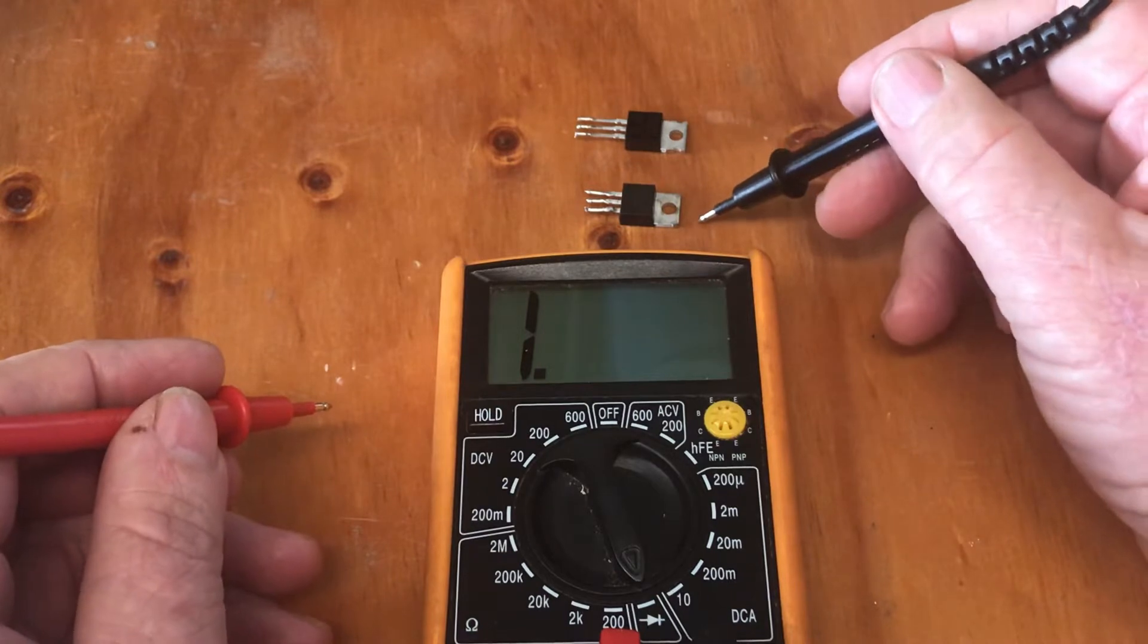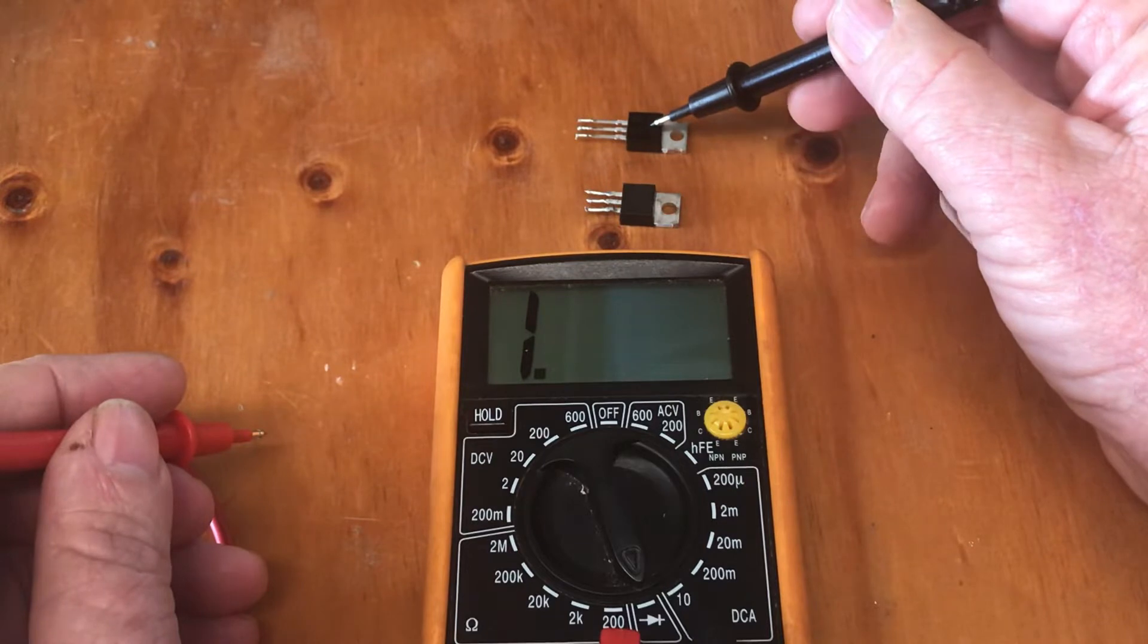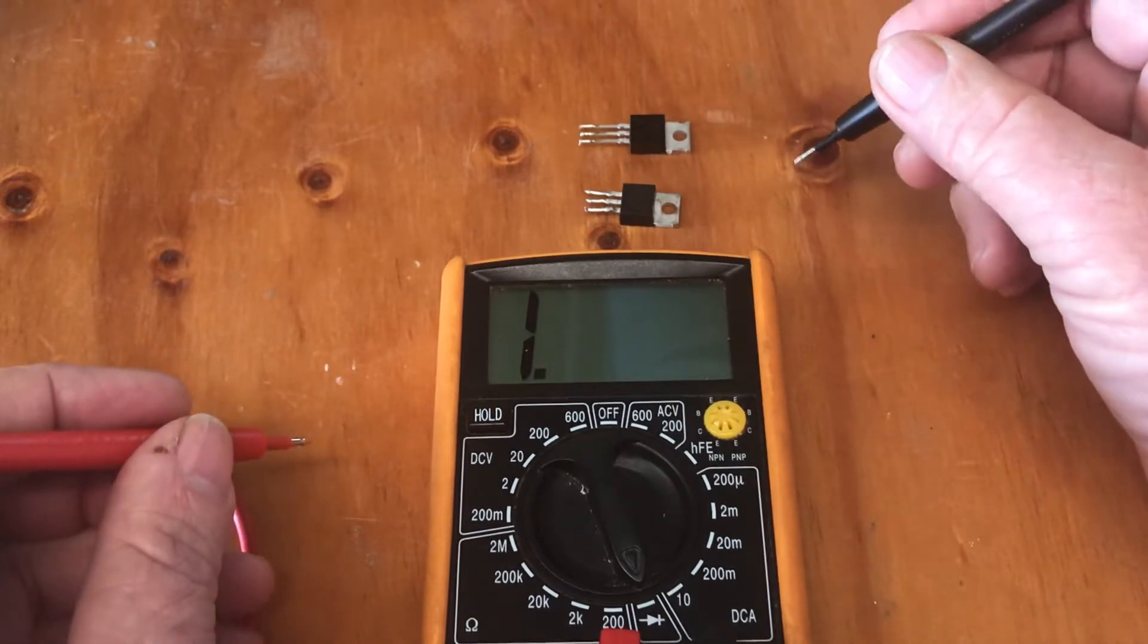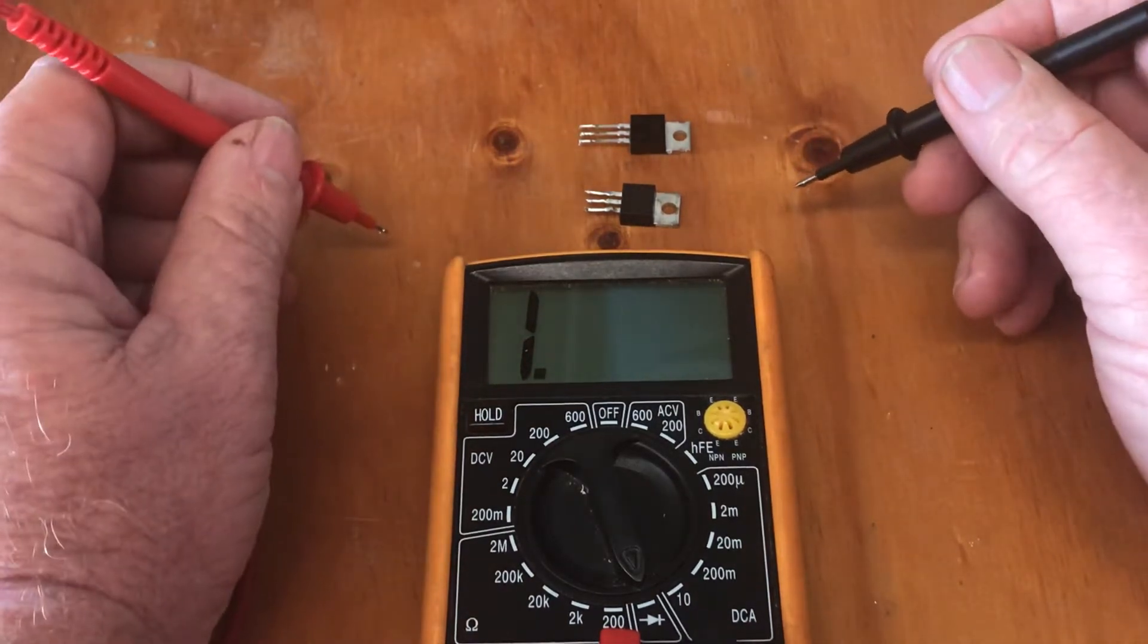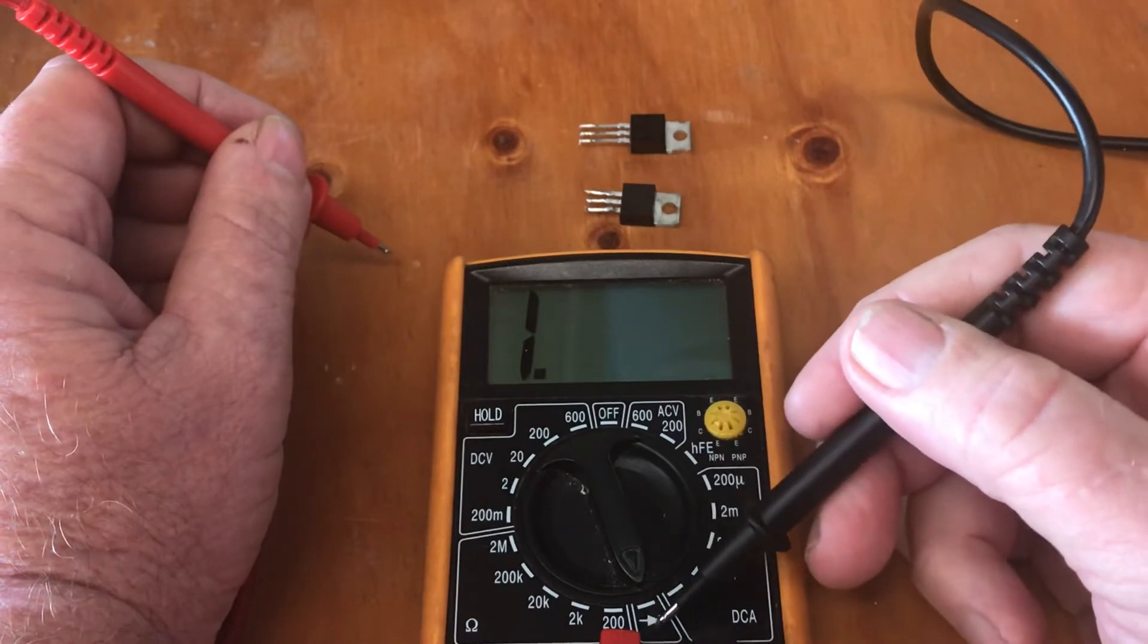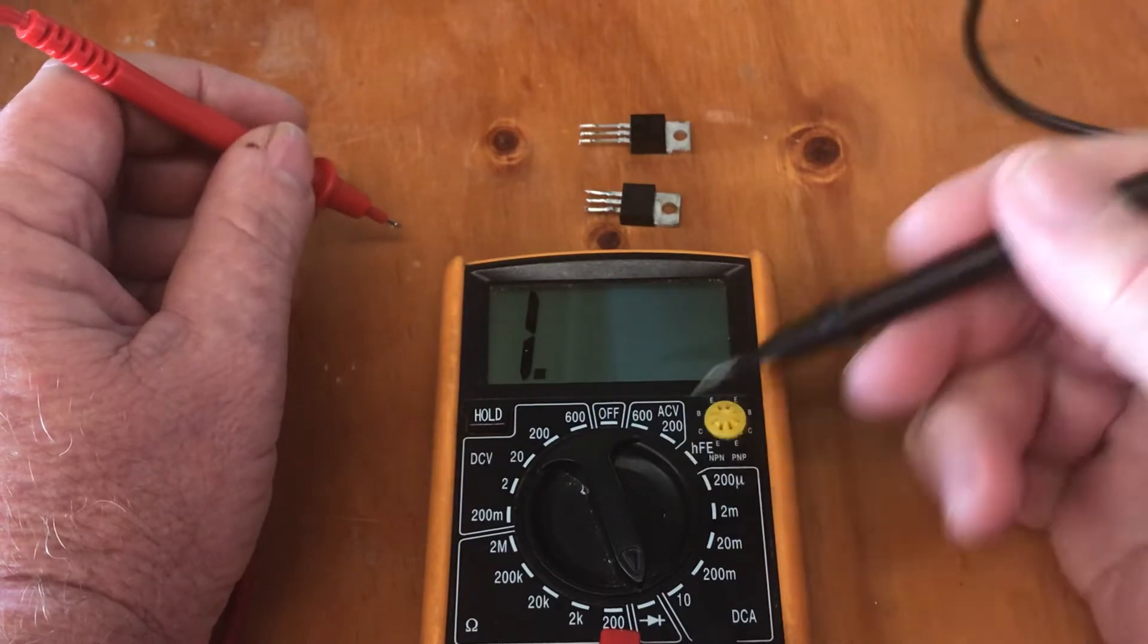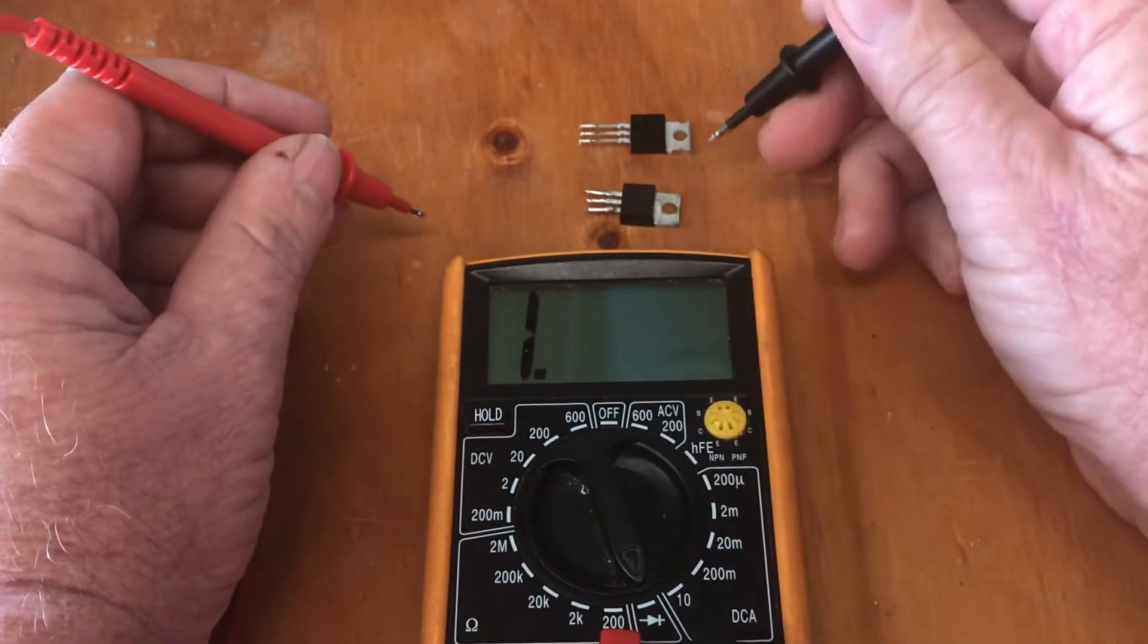I actually bought 20 of these 1545 and I've tested all of them and they're all the same. So I've got the multimeter set here on the diode test. I had no idea, I just use this for continuity in the past, but now I know how to use it for testing diodes.